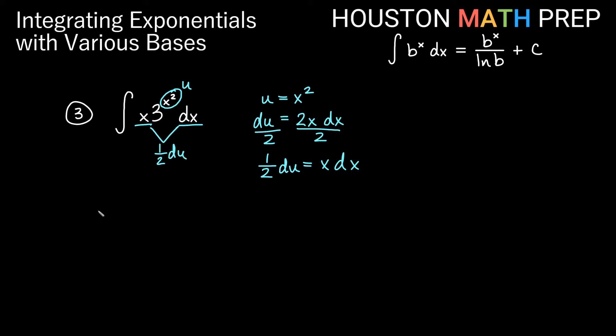Let's bump the 1 half out front. Constant multiple, 1 half. We get integral of 3 to the u. Put your du in the back, 3 to the u du, and now we're going to use our exponential rule here. So we'll get 1 half, we get 3 to the u, so times 3 to the u, divide by the ln of the base, so divided by ln of 3, plus c.